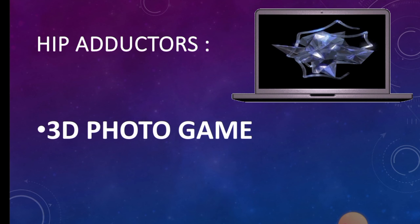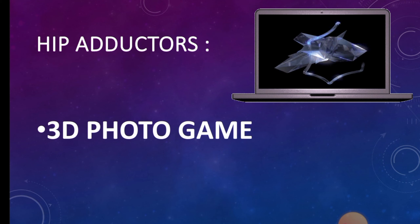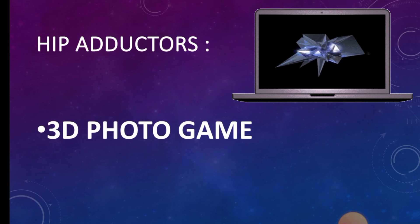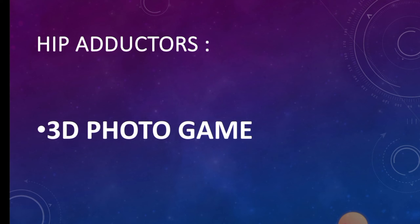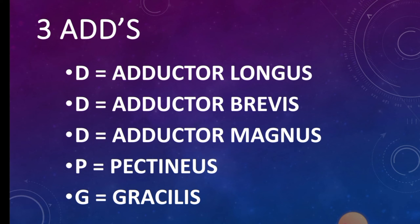Moving towards hip adductors. The mnemonic is '3D photo game.' There are three adductors: adductor longus, adductor brevis, adductor magnus. P for pectineus, and G for gracilis.